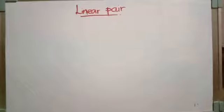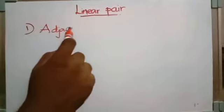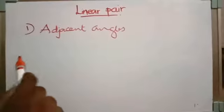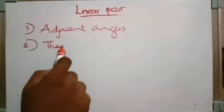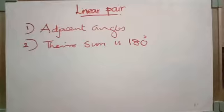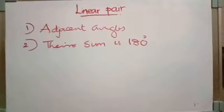For linear pair, we need two conditions. The first condition is they must be adjacent angles. Two angles are said to be a linear pair if they are adjacent angles — that is the first condition. The second condition is their sum should be 180 degrees. So if you make adjacent angles on a straight line, we can call such a pair a linear pair.